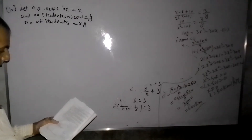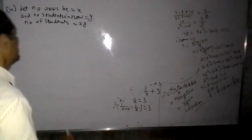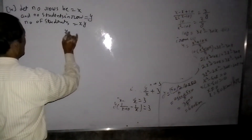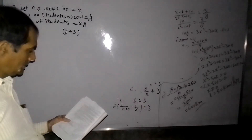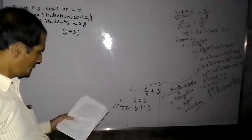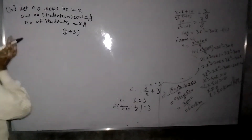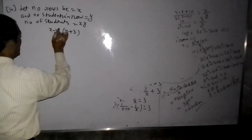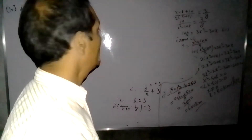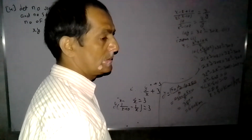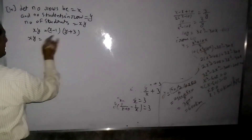If 3 students are more in a row, then Y plus 3 students are in each row. When students per row increase, the number of rows decreases, so there will be 1 row less, meaning X minus 1 rows.